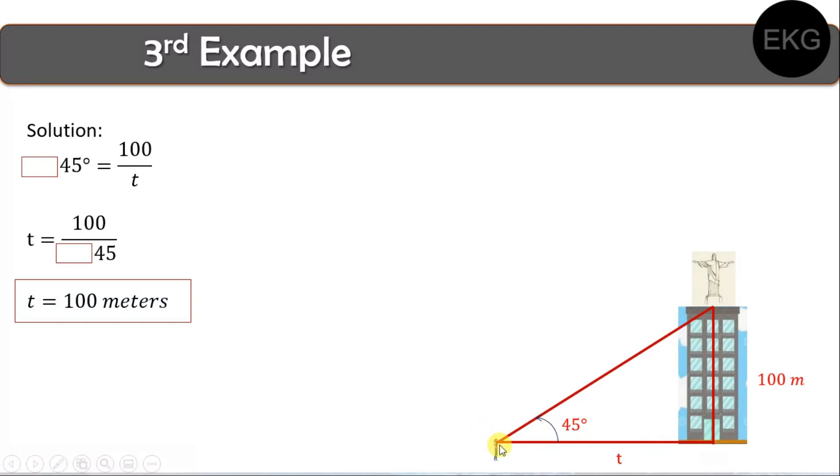Meaning, yung distansya ni Cynthia pala, from the base of the building, at yung height ng building are, or is, the same. So, sakto lang din, kasi kung titingnan mo dito, this is 90 degrees, this is 45, sabi natin last time, na yung sum of internal angles within a triangle is 180. So, meron kang 90, meron kang 45. So, ano yung kulang para maging 180? So, it's also the same, 45 degrees din dito. Kaya, kung yung 45 degrees dito, yung katapat niya is 100 meters, if this is also 45 degrees here, yung katapat din yan will be 100 meters.